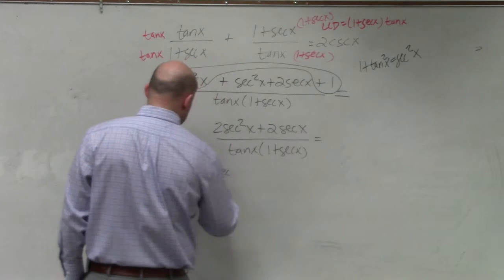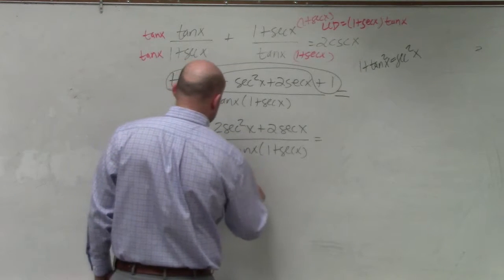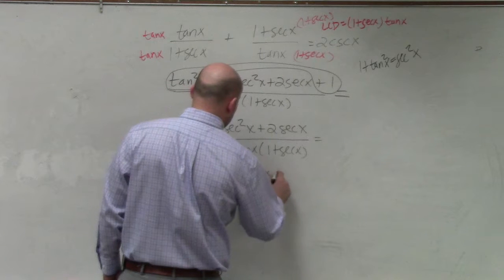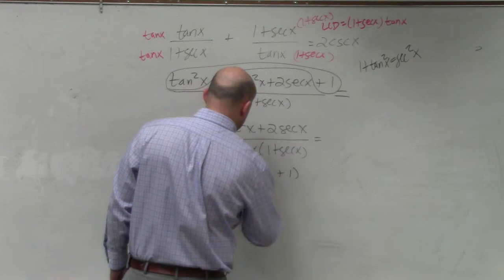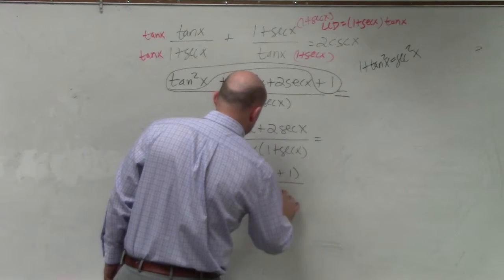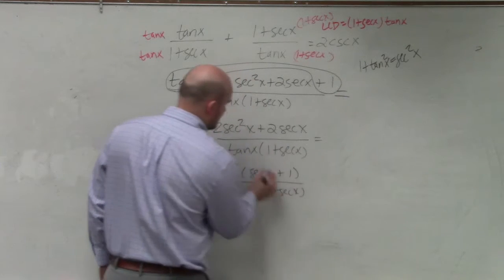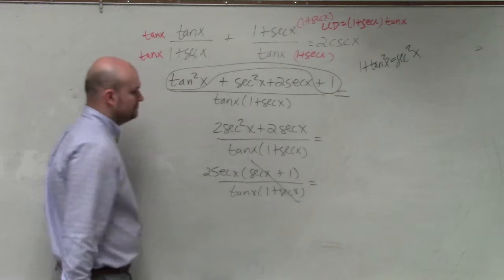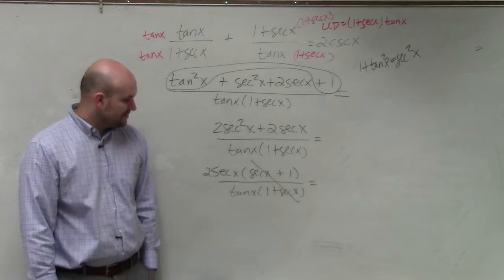So if I factor out, actually, I can factor out a 2sec x. By doing that, I'm left with sec x + 1 all over my common denominator. Those are exactly the same, so those divide out.